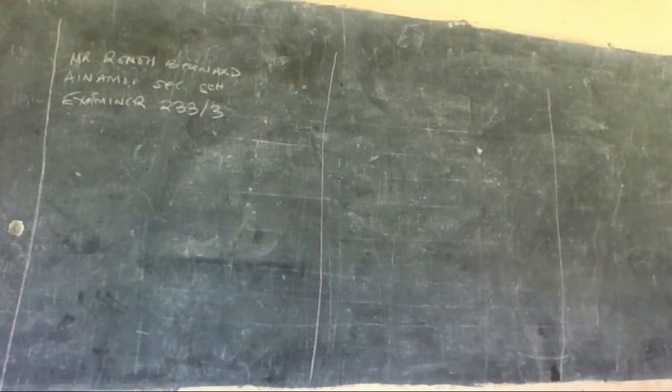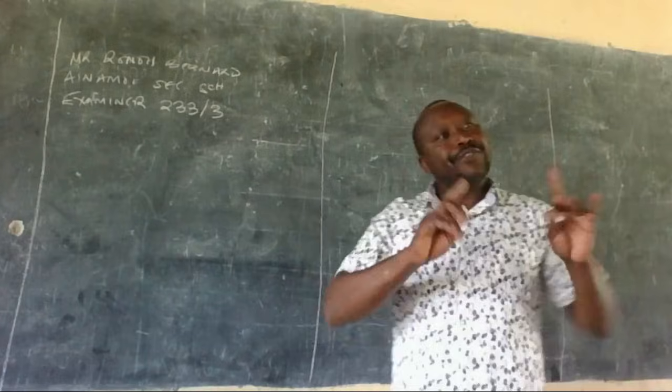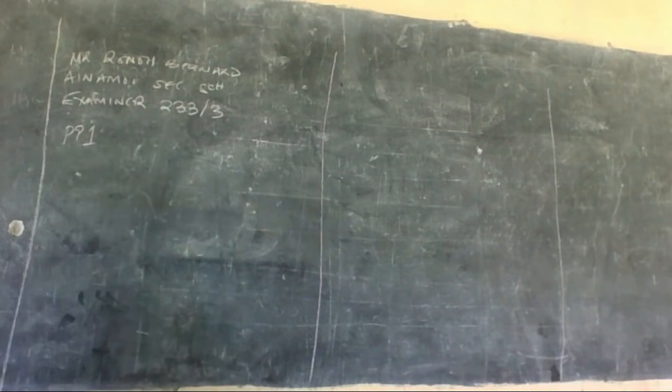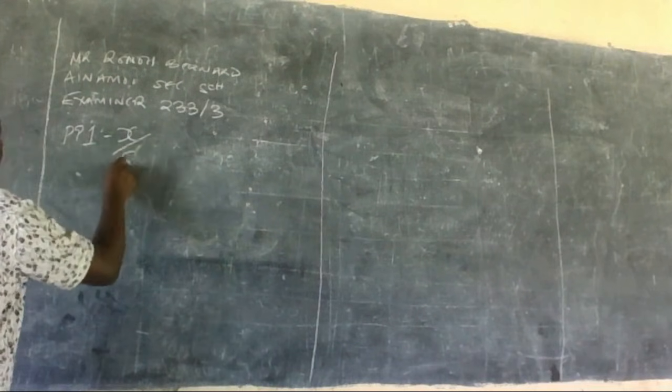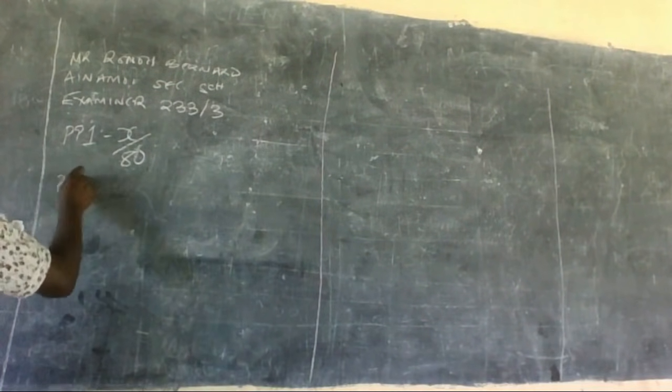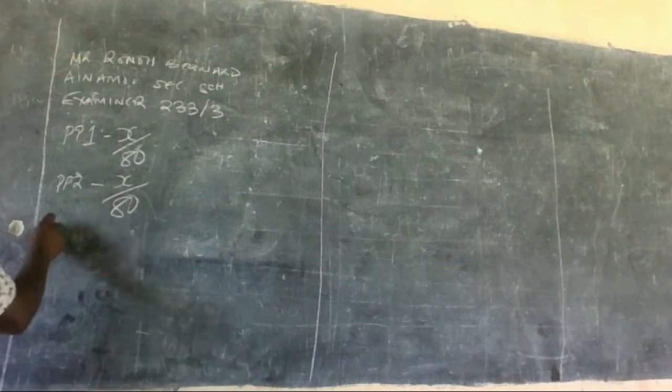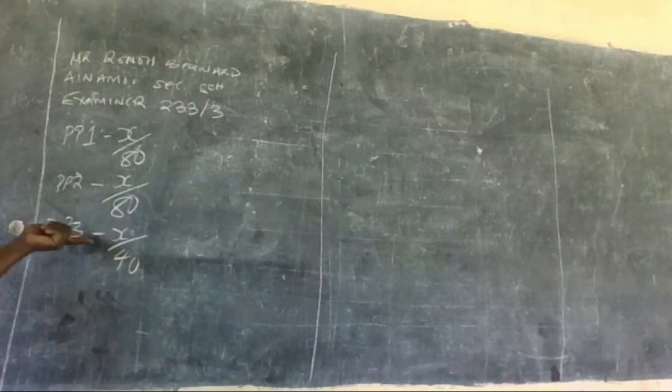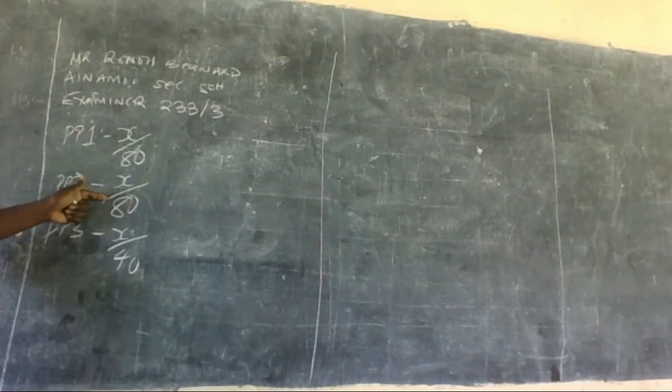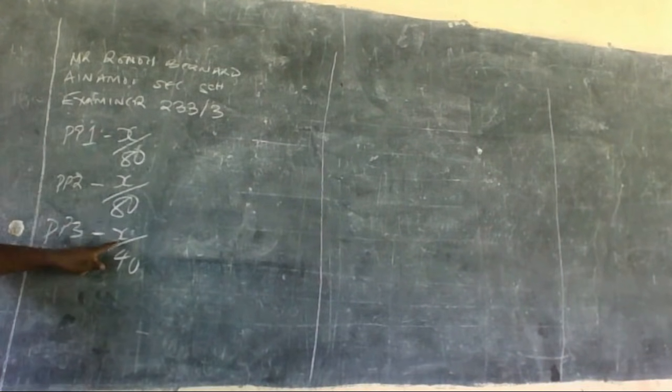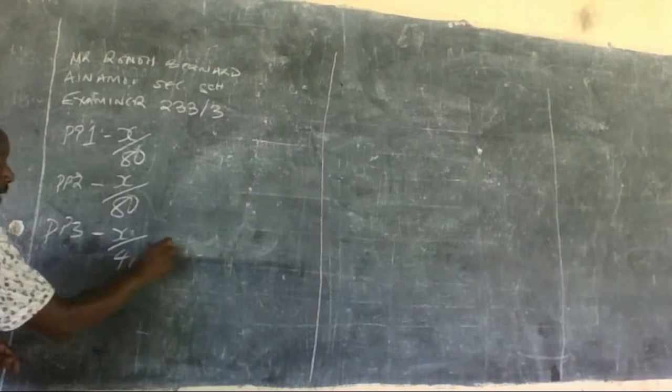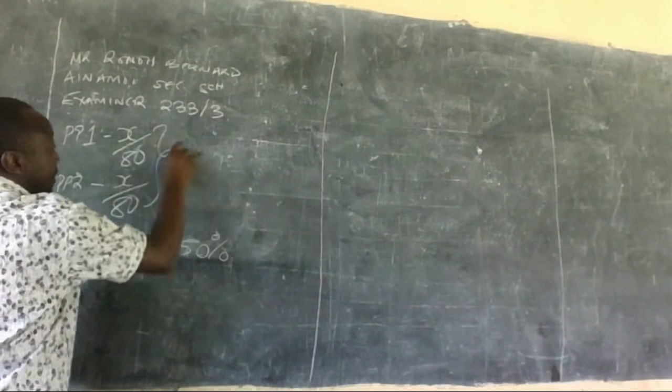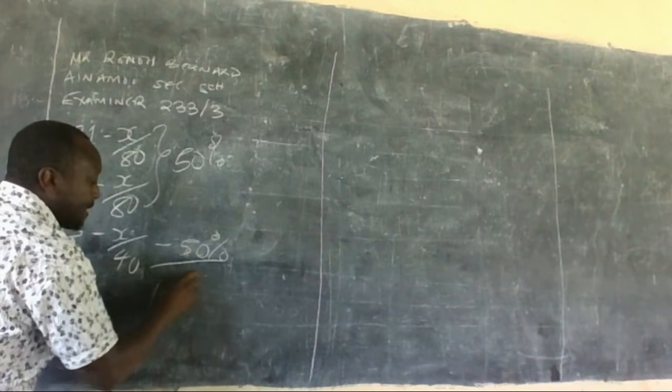Chemistry has three papers. We have Paper 1, which is marked out of 80. Paper 2 is also marked out of 80. Paper 3 is marked out of 40. However, Paper 3 carries 50 percent of your overall grade in chemistry, while Papers 1 and 2 combined are also marked out of 50 percent.